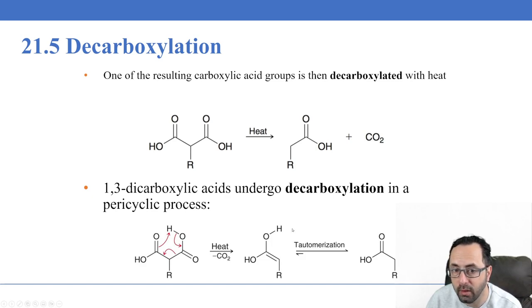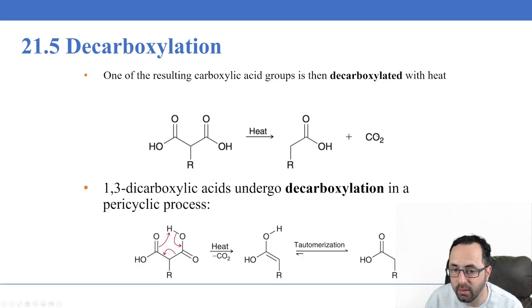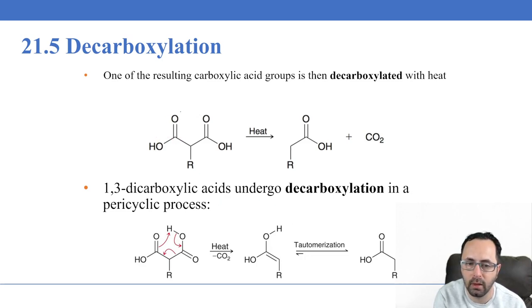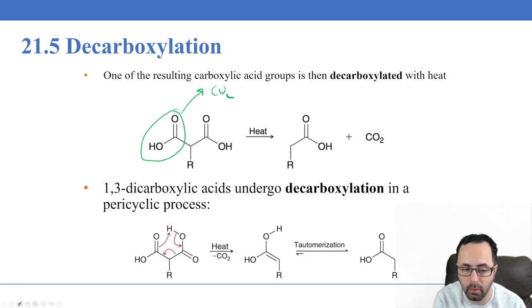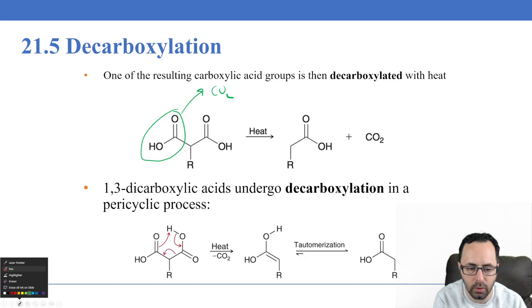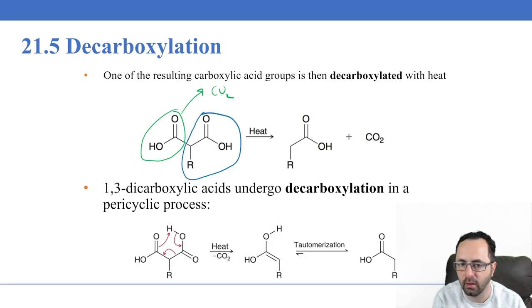One of the carboxylic acid groups is then decarboxylated with heat, as we saw in the carboxylic acid chapter. CO2 is lost, along with the hydrogen from that position, which ends up on the OH group. The driving force is the loss of CO2, which pushes the reaction forward. The group of interest — circled in blue — is retained, and CO2 leaves as a byproduct.